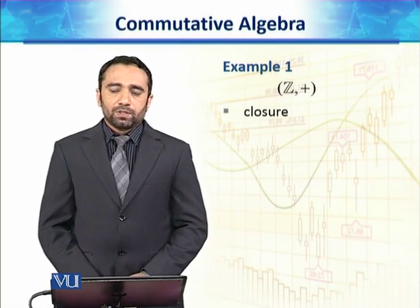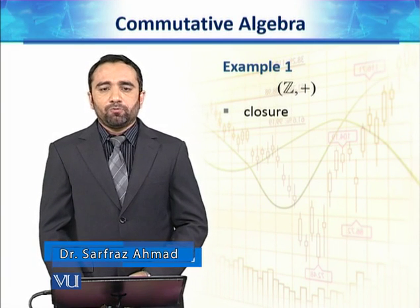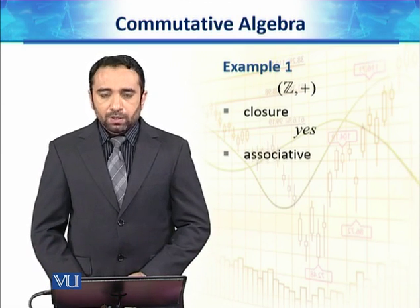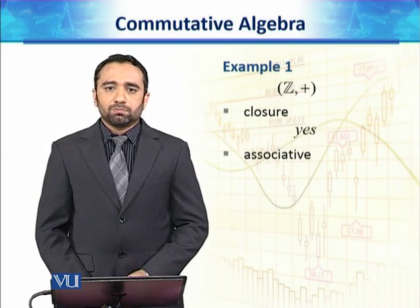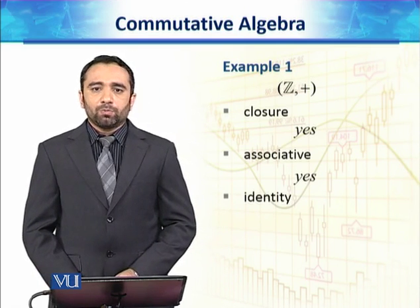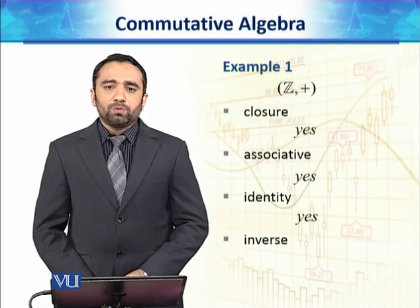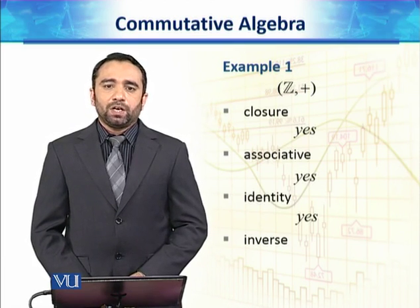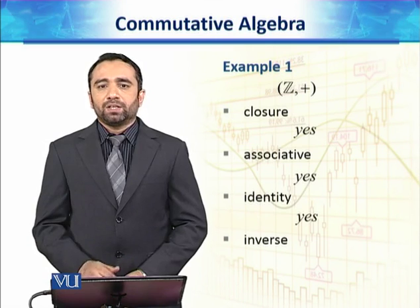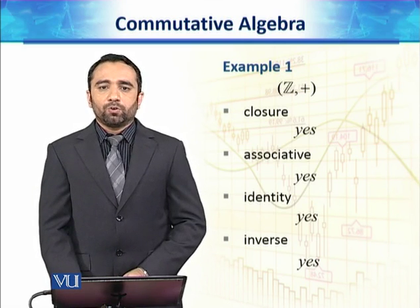The first example is Z, the set of integers, under addition. If we add two integers the answer is again an integer, so closure holds. It is associative — changing brackets does not change the answer. The additive identity in Z is zero, and every element has an additive inverse: for example, the inverse of 5 is -5, and the inverse of -6 is +6. All four axioms hold, so Z is a group under addition.